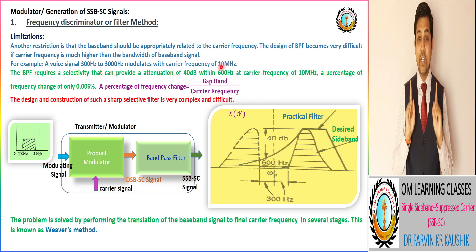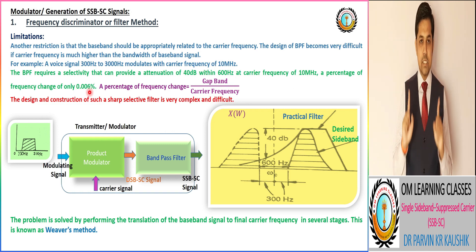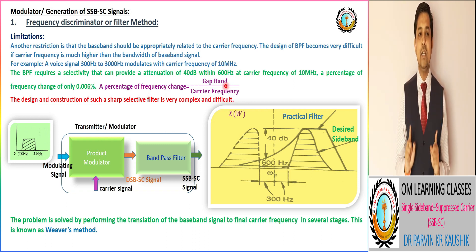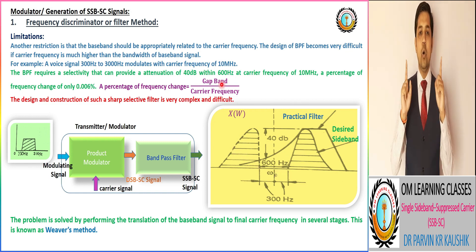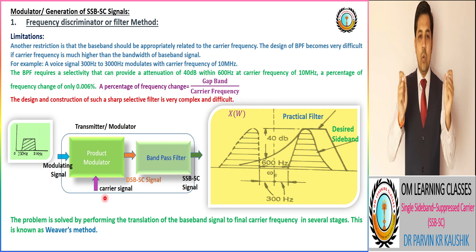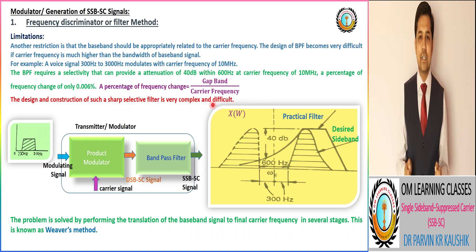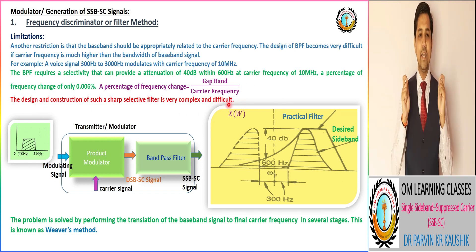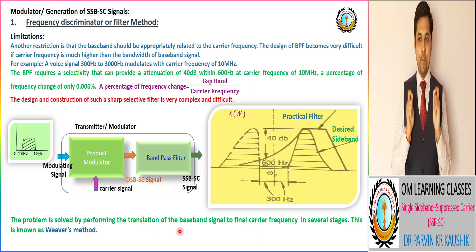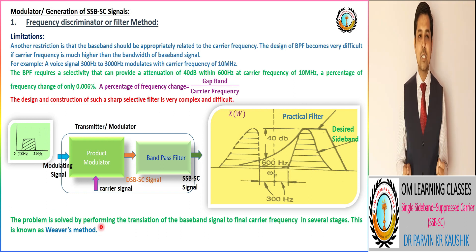The percentage of frequency change is equivalent to 0.006%, which is the ratio of the gap band between desired and undesired sidebands to the operating carrier frequency. This percentage of frequency change requirement of 0.006% means the design and construction of such a sharp selective band pass filter is very complex and difficult. This problem is solved by performing the translation of the baseband signal to the final carrier frequency in multiple stages.